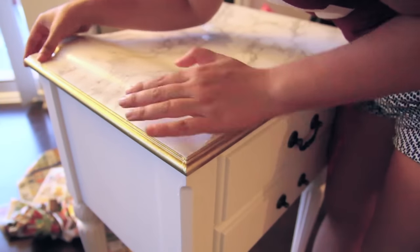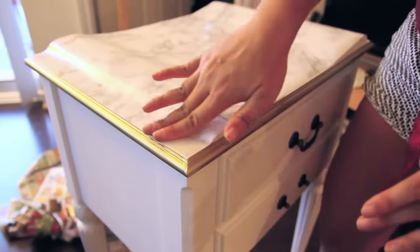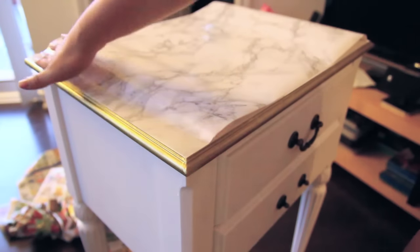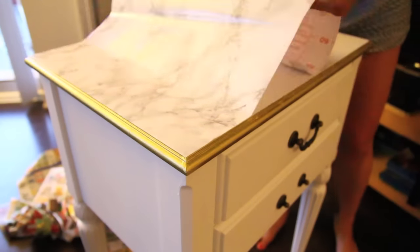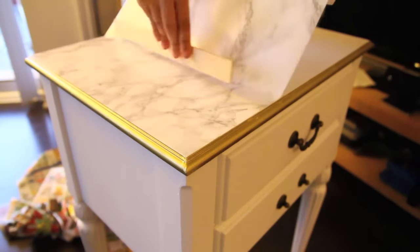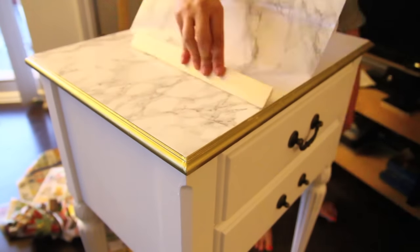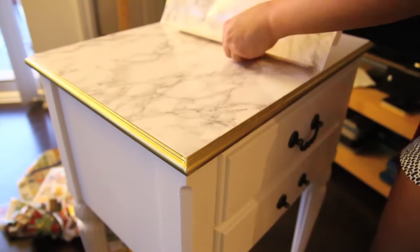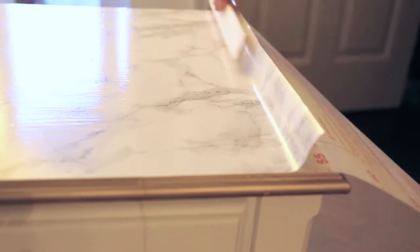Now you want to make sure that's nice and smooth before you start peeling off the lining on the rest of the contact paper. So I'm using the DC fix in grey marble for my table top. And just continue to smooth out your contact paper as you're sticking that down.